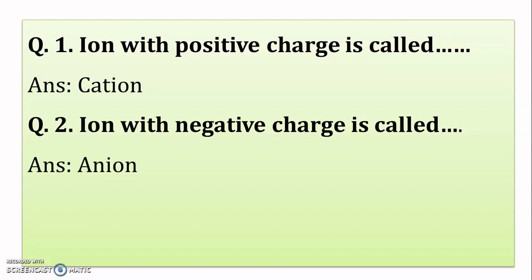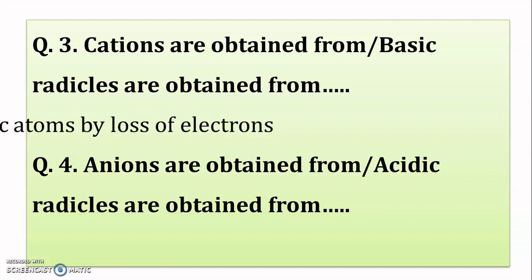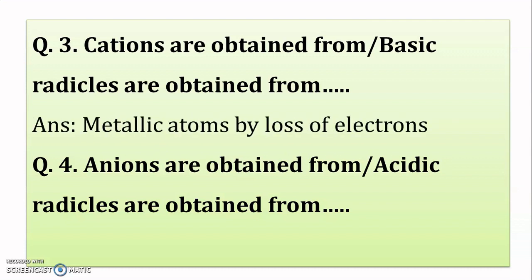We have already covered these in the fourth chapter, that is Chemical Bonding and Catalysis. There are two types of ions: positive ions, called cations, and negative ions, called anions. Cations — that is, positive ions — are obtained from metallic atoms by loss of electrons.